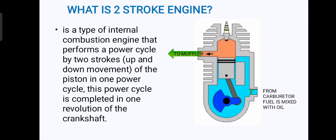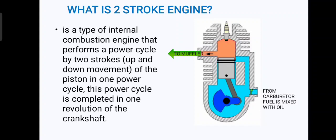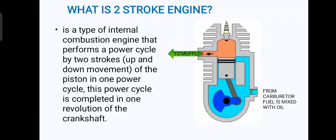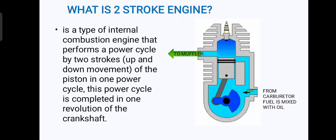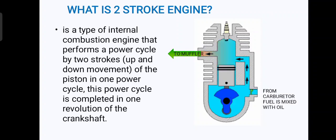Every time the piston moves down, that is when the air and fuel mixture enters the combustion chamber. Once the piston reaches top dead center, compression occurs, and then the spark plug fires. Once the piston moves downward, the power stroke is involved, followed by the exhaust. That is how the two-stroke engine works.